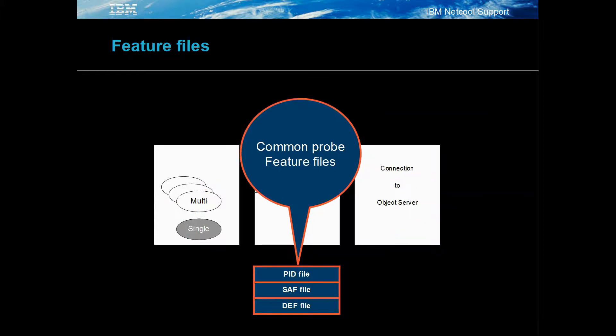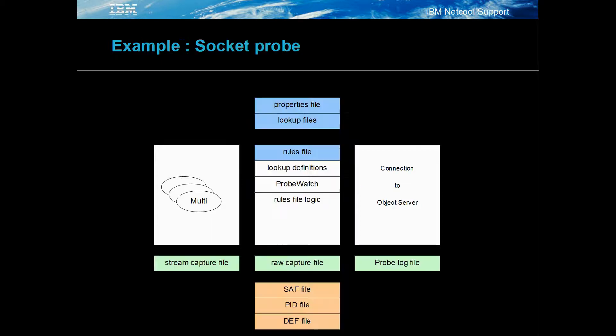The NetCall Omnibus common feature files allow features such as process logging and store and forward. The probe's def file holds the fields seen in the object servers that the probe connects to, and is auto-generated.